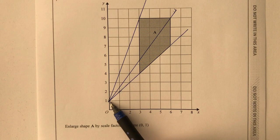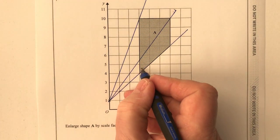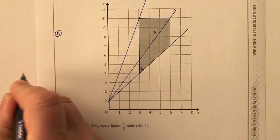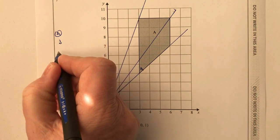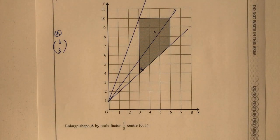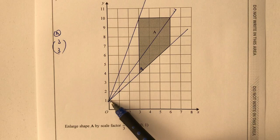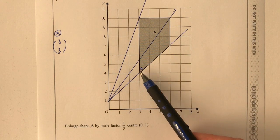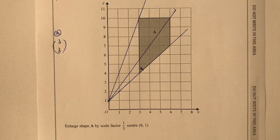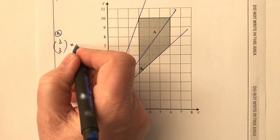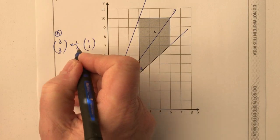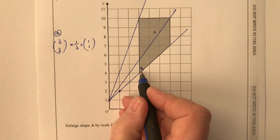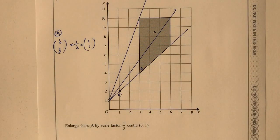From the centre point zero one, we go to each corner. For corner A, we've got a vector of along three and up three, written as (3, 3). To get from the centre to point A we go along three jumps and up three jumps. But they're asking us to enlarge by a scale factor of a third, so we multiply this vector by a third: along one and up one. Vertex A has now become A dash.